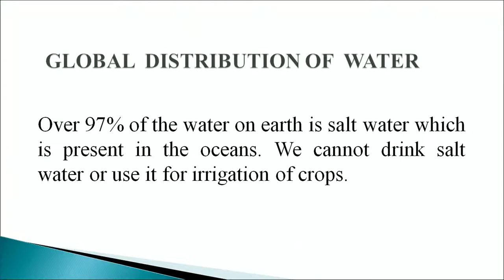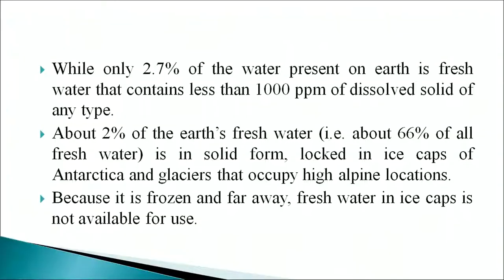Over 97 percent of water on Earth is salt water present in the oceans. We cannot drink salt water or use it for irrigation of crops. Only 2.7 percent of water on Earth is fresh water, containing less than 1000 ppm of dissolved solids. About 2 percent of the Earth's fresh water — approximately 66 percent of all fresh water — is in solid form, locked in ice caps of Antarctica and glaciers in high alpine locations. Because it is frozen and far away, this fresh water is not available for use.